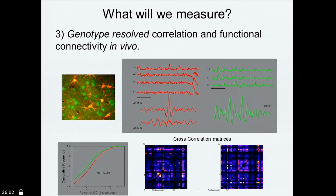You can study correlation, because synchrony and desynchronization are extremely important — not just for epilepsy, but for cognitive processing that the brain operates. These matrices here are measures of coherence between different neurons. You can envision studying coherence between different classes of neurons depending on their genotype.